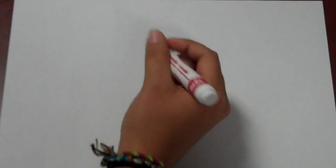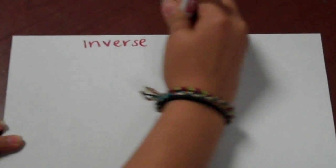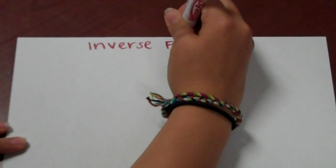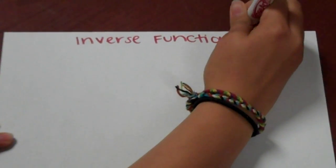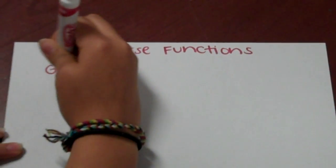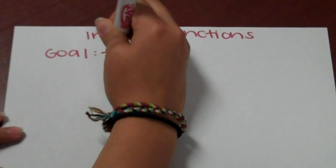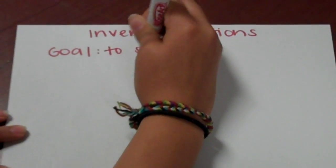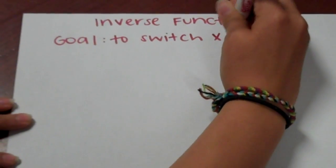Hello, we are going to teach you about finding an inverse of a function. The general concept is that you need to switch the x and y and then solve for y. Since the inputs and outputs of a function switch in its inverse, solving for y gives you the inverse.